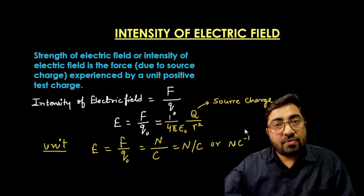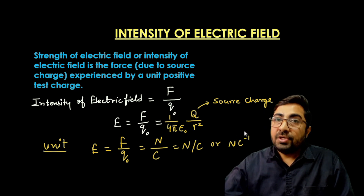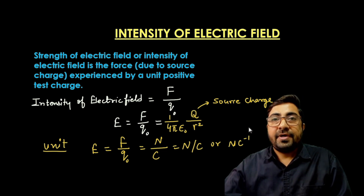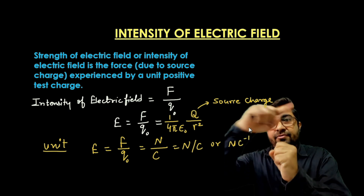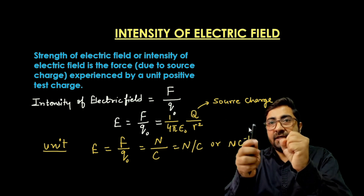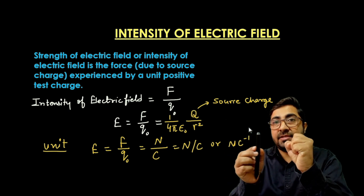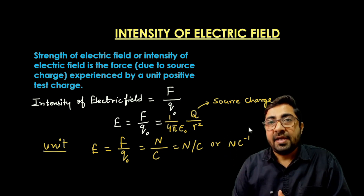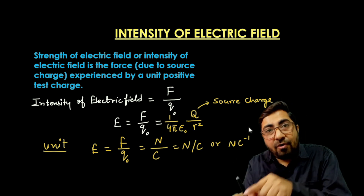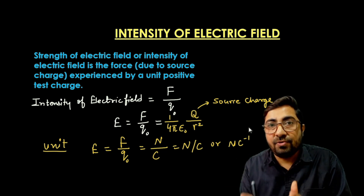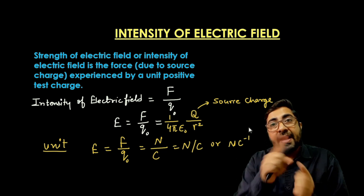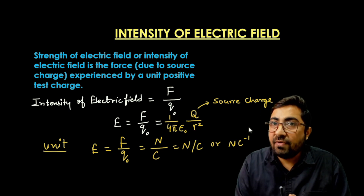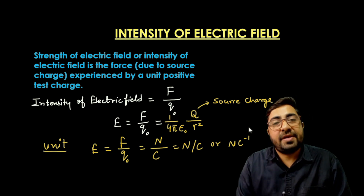Force is a vector quantity. So the electric field is also a vector quantity, because if I place a test charge in the region of the source charge, the test charge experiences a force in a particular direction. Since the electric field is the force due to the source charge applied on the test charge, and force is a vector, electric field is also a vector quantity.